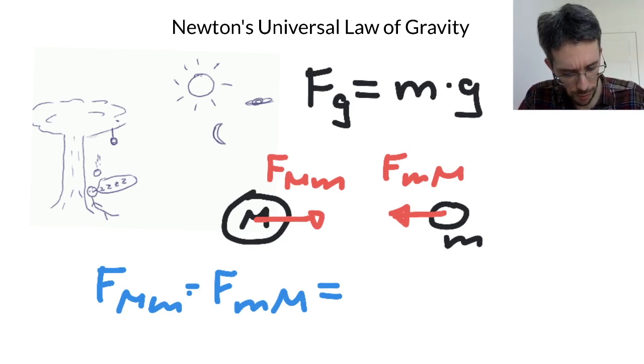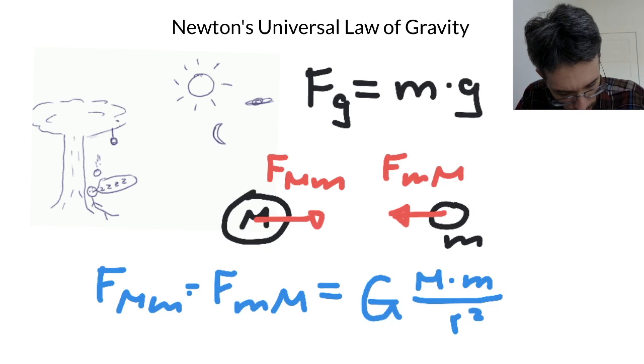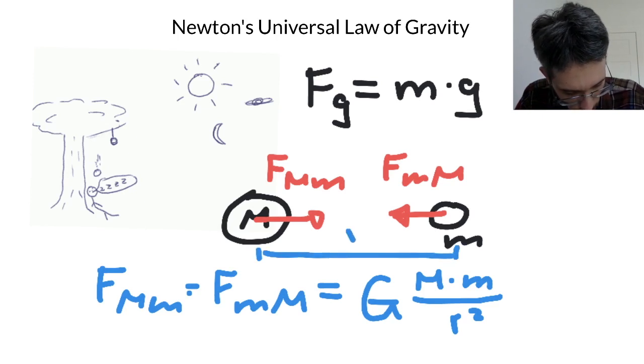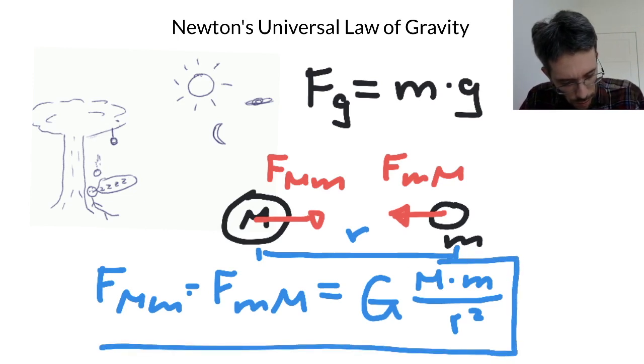But there is a universal law of gravity that tells us what this force exactly is and it goes the following: We use a new constant that we call capital G, that depends on the mass of the first object times the mass of the second object, and then divide it by the distance squared. So the distance being from the center of one object to the center of the other object. And that is what we call the universal law of gravity.